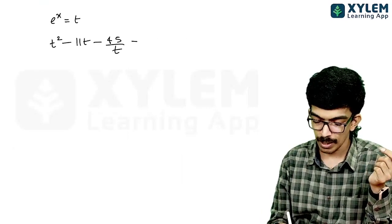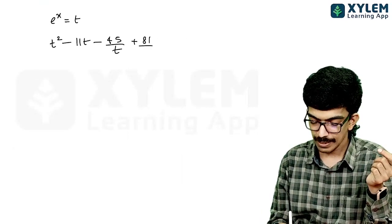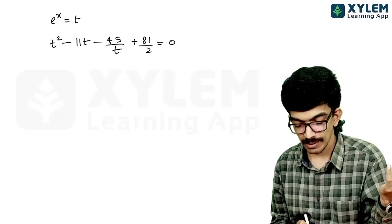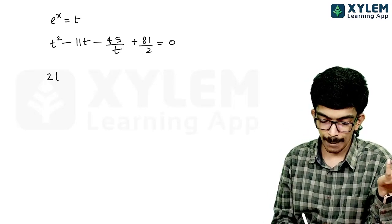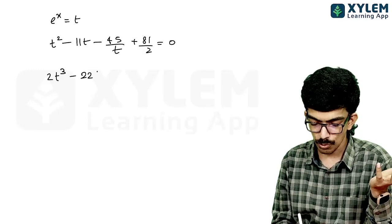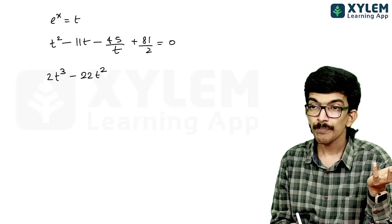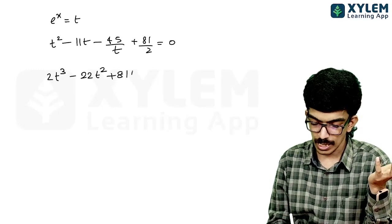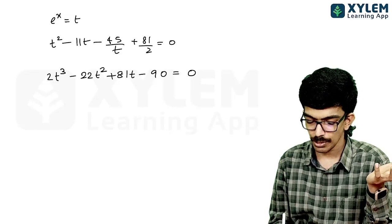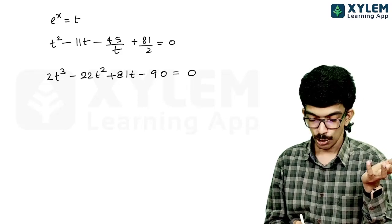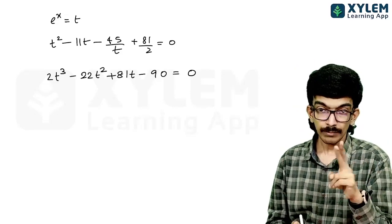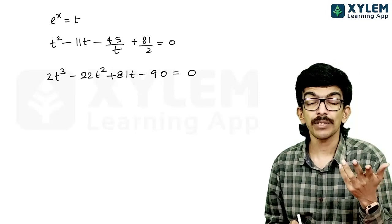Multiplying through by 2t gives: 2t³ - 22t² + 81t - 90 = 0. This is a cubic equation, which will have three roots. We need the sum of the x-values corresponding to those roots.